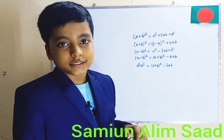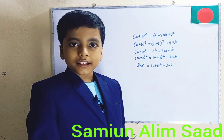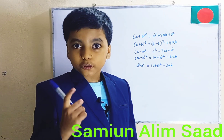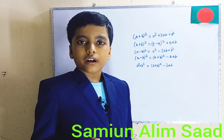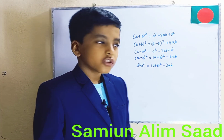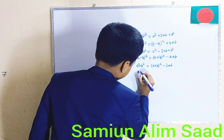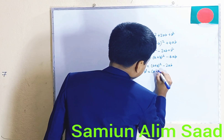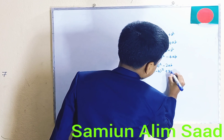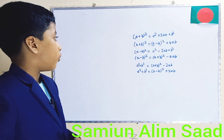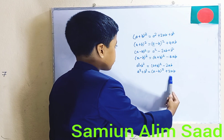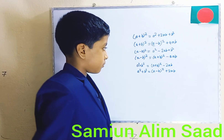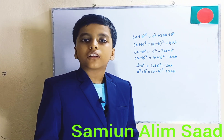A squared plus B squared also has another formula, just like the two we already learned. The other formula is: A squared plus B squared is equal to A minus B whole square plus 2AB. It's again simple. Look — there's a minus 2AB inside A minus B whole square, and the plus 2AB cancels it out. Simple — algebra proof next time.